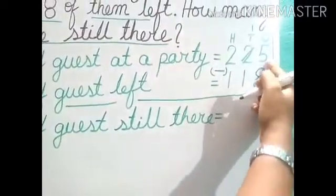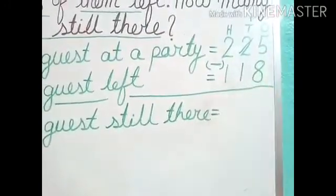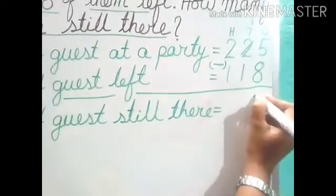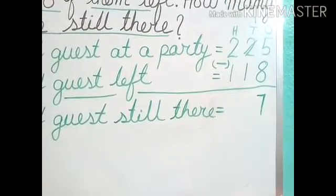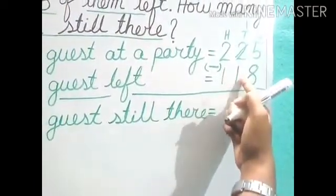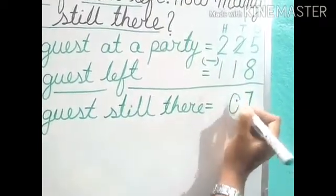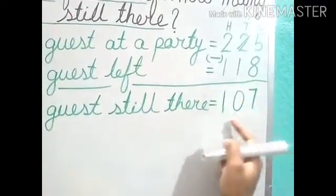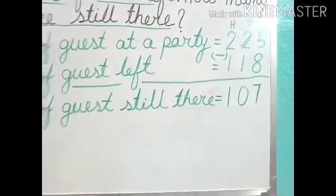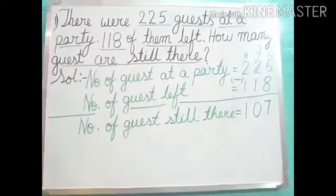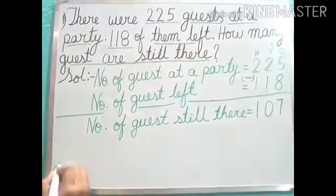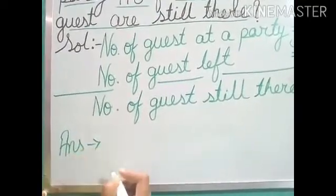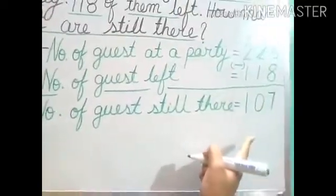So 15 minus 8 — tell me. It is 7. Now next, this tens digit became 1, so 1 minus 1 equals 0. And here, 2 minus 1 equals 1. So 107 guests are still there. We are going to write the answer: 107 guests are still there.